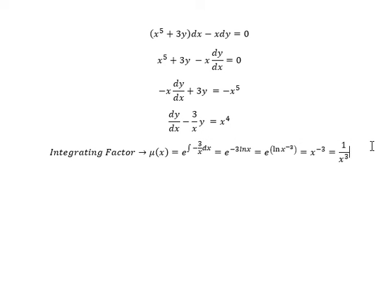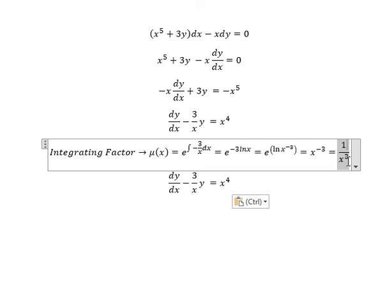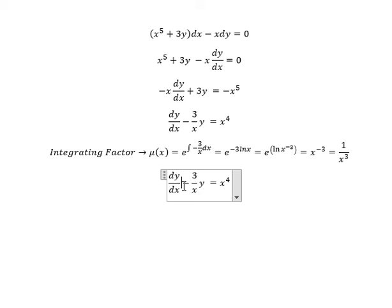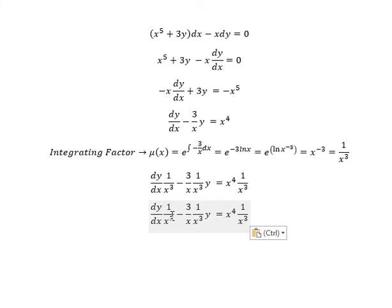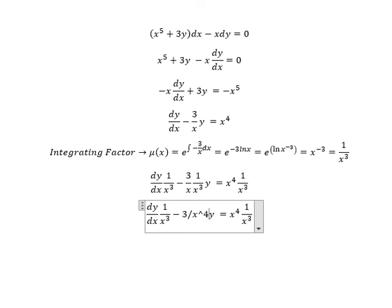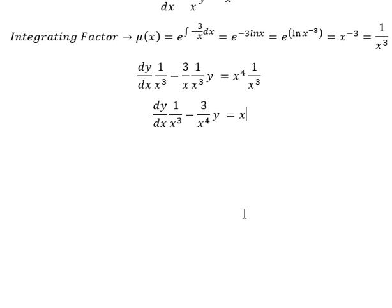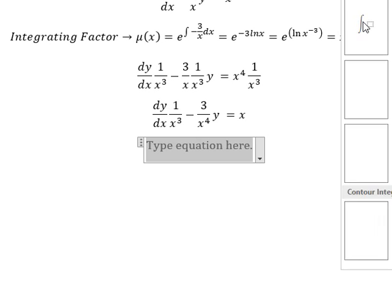That means we need to multiply both sides by this one. So this one we have 3 over x to the power of 4. This one you got about x. Next, we have x to the power of negative 3. Next, we put the integration for both sides.